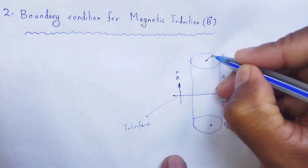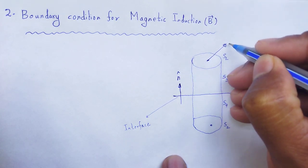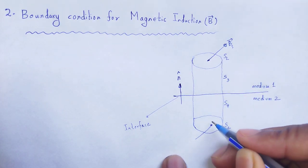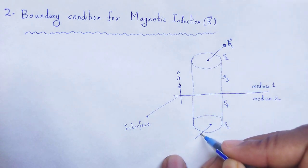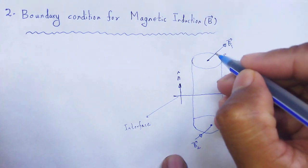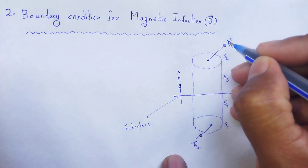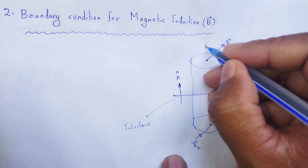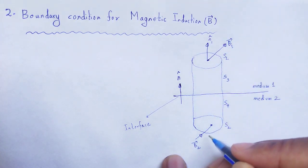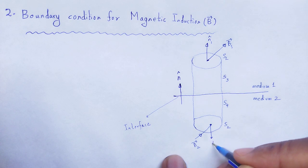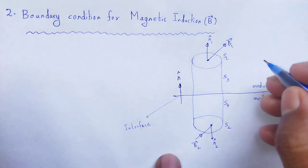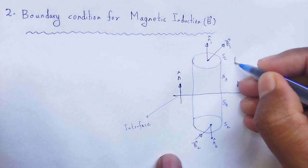The magnetic induction B vector at medium 1 is B1 vector, and at medium 2 is B2 vector; these two are in the same direction. The direction of magnetic field induction in medium 1 is N1-cap and in medium 2 is N2-cap. The height of the Gaussian surface or pillbox is the edge height.